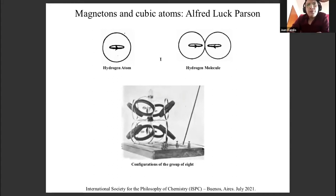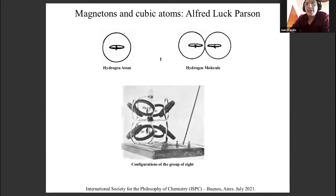Parsons was in contact with Lewis too, so he had in mind that there was something interesting regarding the group of eight electrons. He developed this toy model in which he represents the structure of a cube atom with eight magnetons — one in every corner. The black rings are the magnetons and the silver rings are the positive sphere of the molecule. He then tried using different currents to produce certain magnetic properties in this disposition and tried to give empirical support through this model to the idea of the octet rule of Lewis.